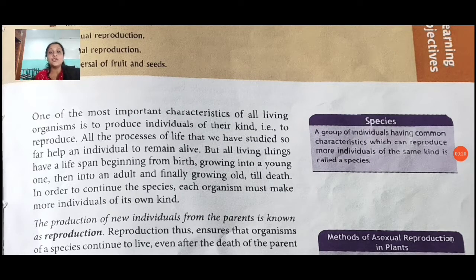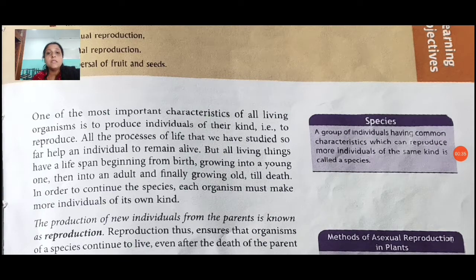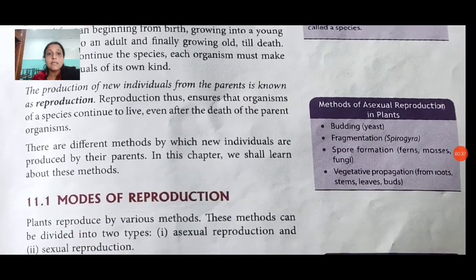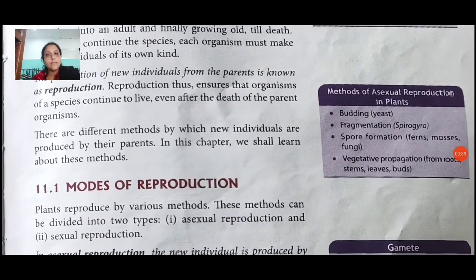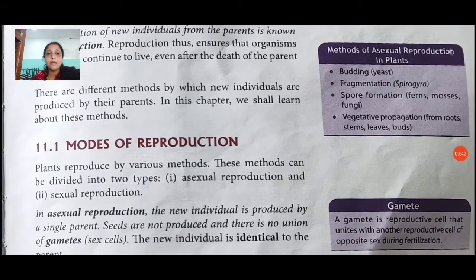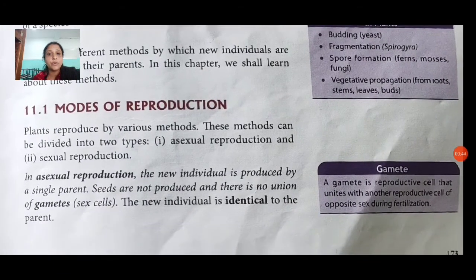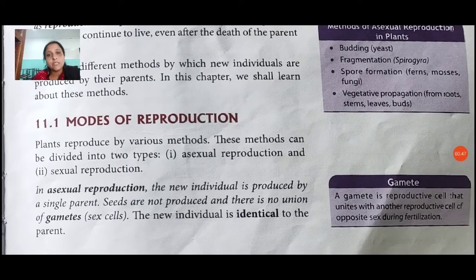One of the most important characteristics of all living organisms is to produce individuals of their kind. All the processes of life we have studied help individuals to remain alive — that means reproduction is necessary for all organisms which live on earth. Plants reproduce by various methods, and these methods can be divided into two types.